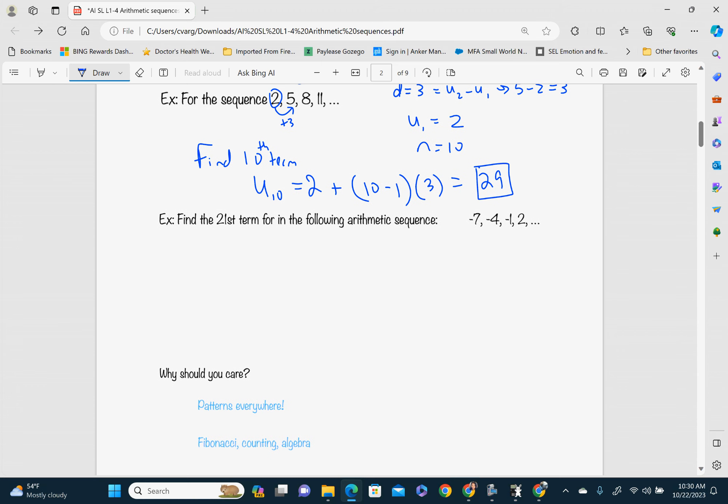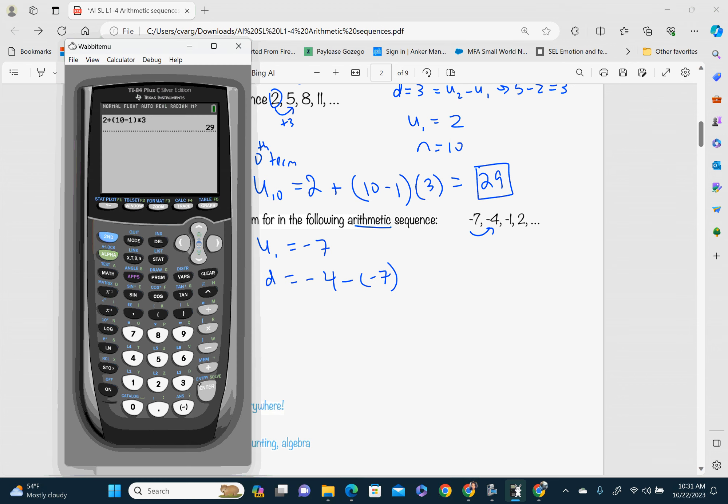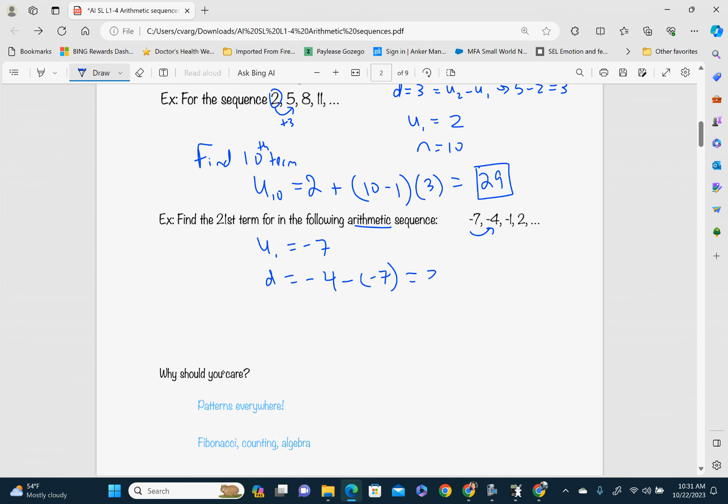And this is another example. Find the 21st term. So we need to find U1, which is our first term, which is negative 7. We have to find our common difference. It's telling us it's arithmetic. So we know that we're going to add to get to the next number. So this might be a little bit more difficult to find what we're going to add by. So let's use our trick. Take U2, so negative 4 minus U1, which is negative 7. So I'm taking my calculator here, negative 4 minus parentheses negative 7. And I get 3. So my common difference is 3 here.